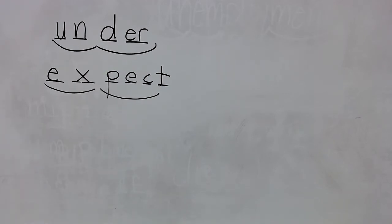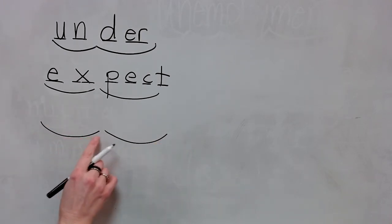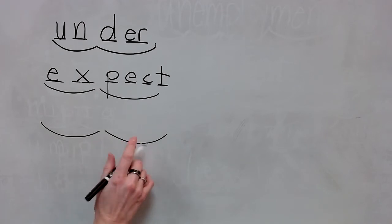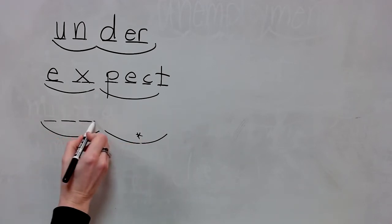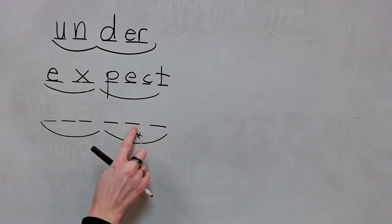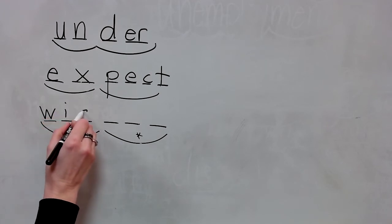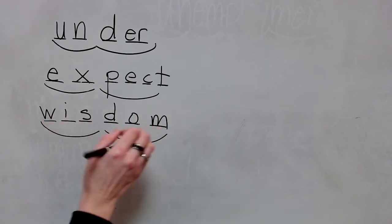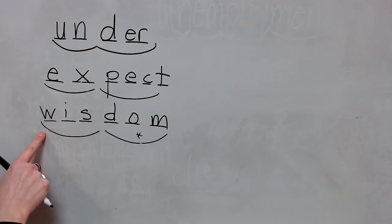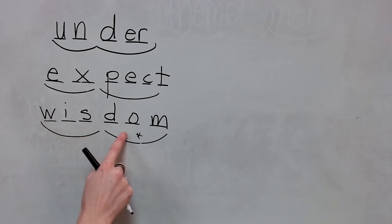The next word is wisdom. Syllables: wis-dom. We say wisdom — there's a schwa here. Stretch: wisdom. It's spelled wisdom. This is the schwa sound. Write the spelling for wisdom. Check it and correct it. Spell wisdom. Wisdom.